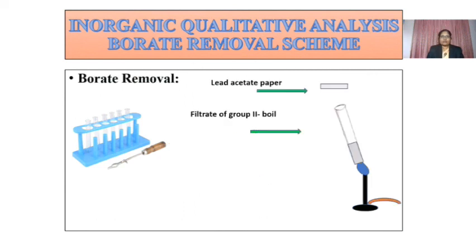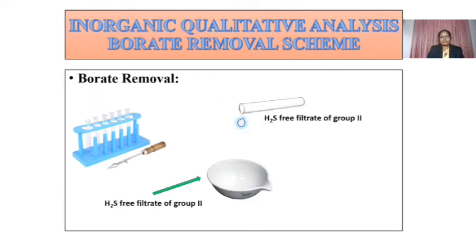The next part of this experiment is the removal of borate. To remove the borate, use the filtrate of the second group and then boil it to expel out the H2S. Test it with lead acetate paper and use this H2S-free filtrate for the borate removal test.